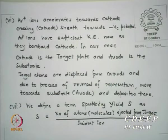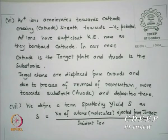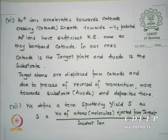We define the term sputtering yield — that is the most important term. It is defined as the number of atoms or molecules ejected from the target per incident ion. Say one incident argon ion — how many atoms come out of the target — that is the sputter yield S. Argon ions hit the target, give energy to them, and the target atoms get excited and come out.